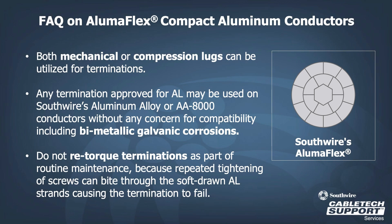Here is a good time to address some frequently asked questions about compact aluminum conductors. When asked about terminations, both mechanical and compression lugs can be utilized. Any termination approved for aluminum conductors may be used on AlumiFlexflex conductors without any concern for compatibility, including bimetallic galvanic corrosion. Do not re-torque the terminations as part of your routine maintenance, as repeated tightening of screws can bite through the soft drawn aluminum strands, causing the terminations to fail.